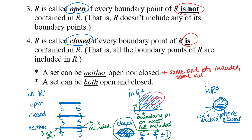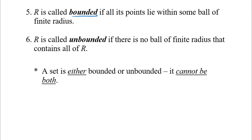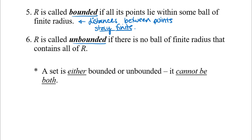I want to go ahead and talk about two more vocabulary words. The last two are bounded and unbounded, and these really have to do with distances. Region R is called bounded if all of its points lie within some ball of finite radius — basically the distances between all the points stay finite. Region R is called unbounded if there is no ball of finite radius that contains all of R — in this case the distances get infinite.